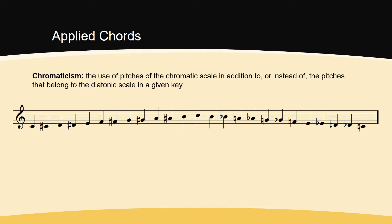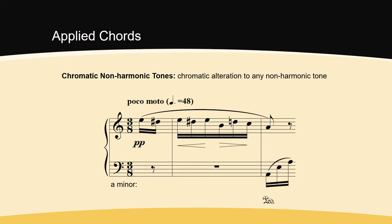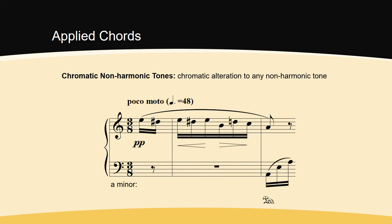One easy way to add chromaticism to music is in the form of chromatic non-harmonic tones. Any of the previously discussed non-harmonic tones from module 22 can be altered to include chromaticism. For example, the opening of Beethoven's Für Elise presents a repeated chromatic lower neighbor tone.